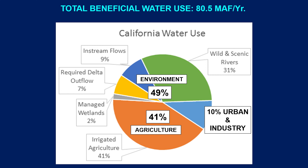Particular concerns exist for the Tulare Lake, South Coast, and Colorado River areas, where groundwater levels declined more than seven meters between 2011 and 2017. This is also the reason why the Sustainable Groundwater Management Act (SGMA) was established.